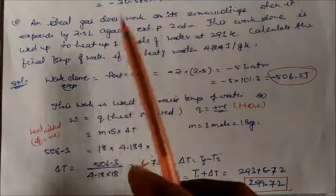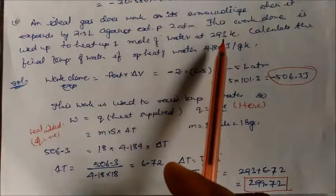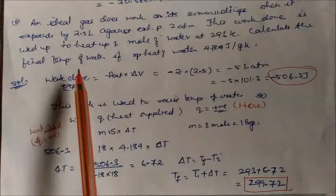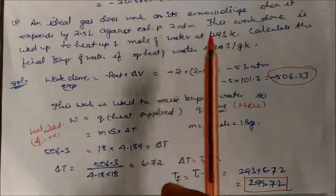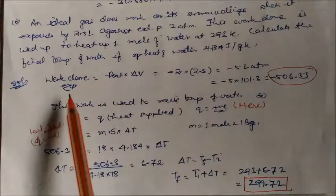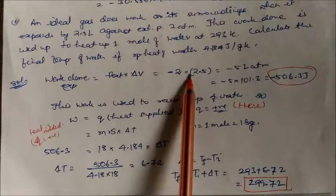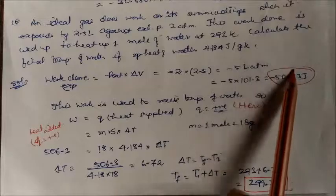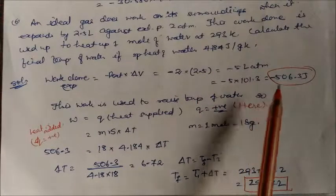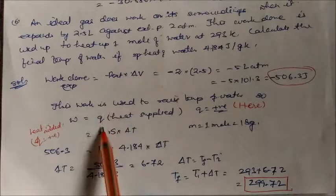Problem 4: A gas in a cylinder with a frictionless piston expands at constant pressure of 1 atmosphere from 4 liters to 40 liters, absorbing 800 joules of thermal energy. Work expansion w = −p_external × ΔV = −1 × (40 − 4) = −36 liter·atm. Converting: −36 × 101.3 J. By First Law: ΔU = q + w = 800 + w.